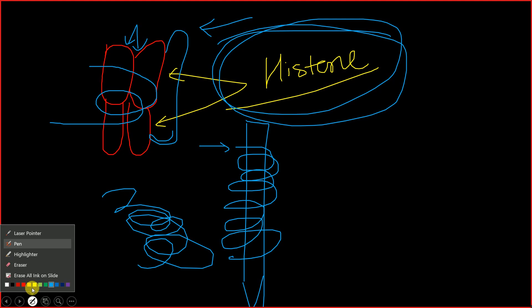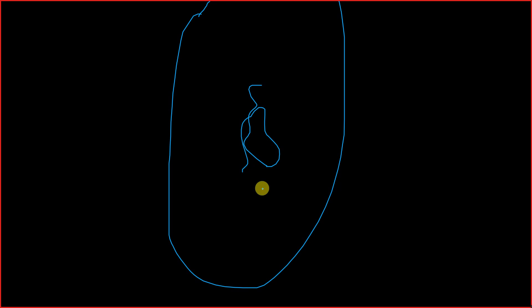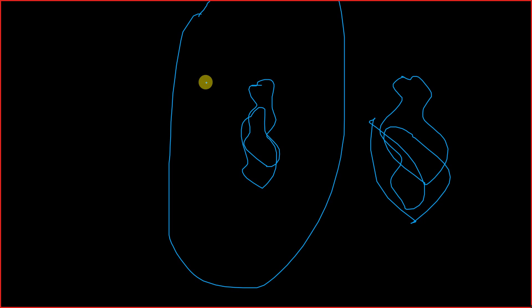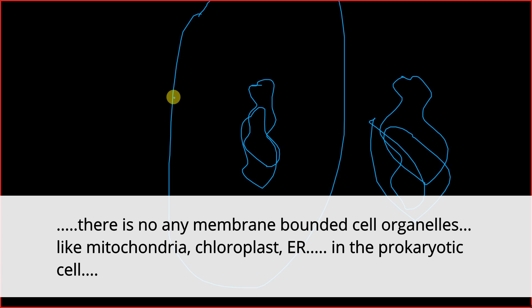The arrangement of DNA into chromosomes is seen in eukaryotic cells but not in prokaryotic cells. In prokaryotic cells, the DNA simply lies in the center of the cell in a circular form, and there are no membrane-bound cell organelles.